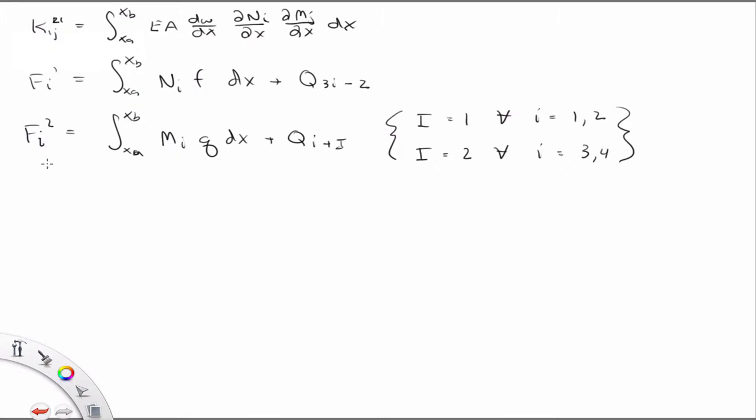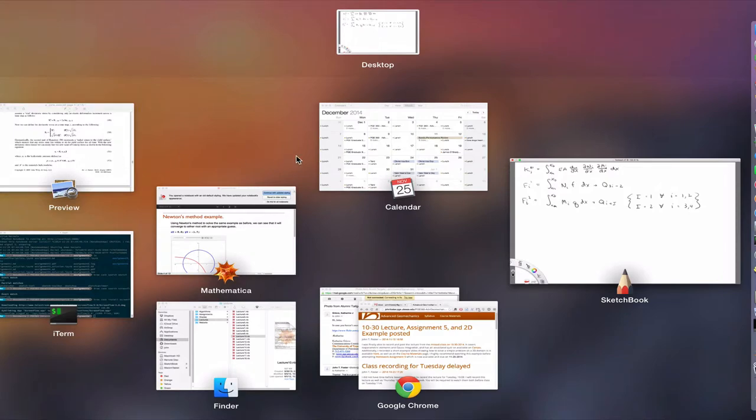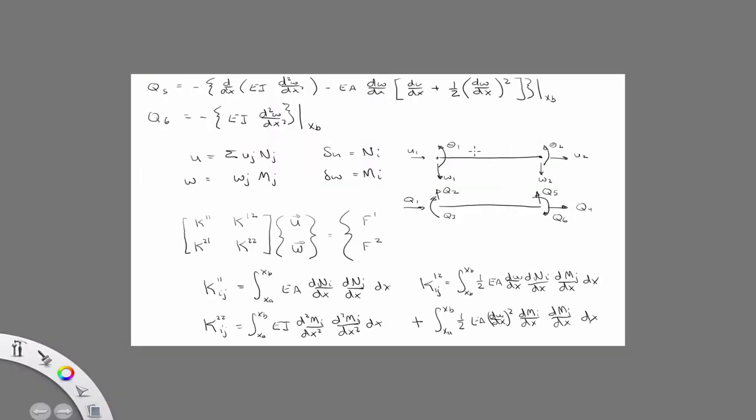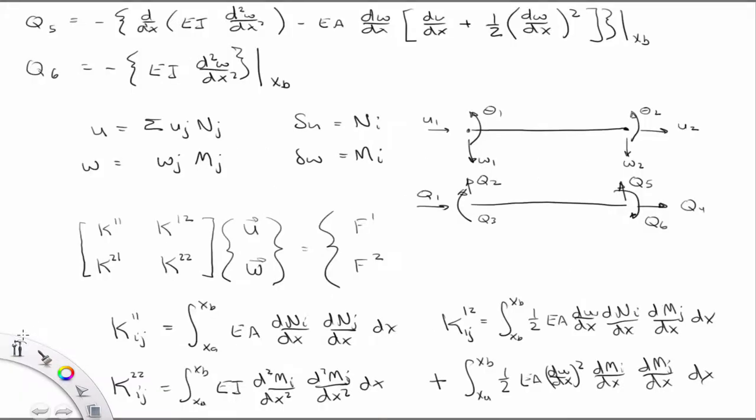So, I wrote all of that to basically highlight this. If you look at K11, it's the same for a bar. There's no change, right? But look at K12 and K22.